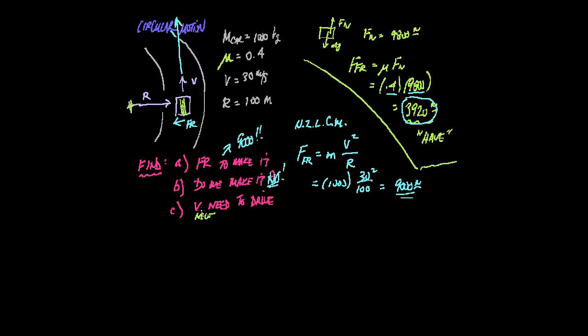So how fast can we go into that corner? Well, we're going to still use Newton's second law for circular motion. The friction we're going to use now is the 3920 because that's how much we have available based on our car and the coefficient. Put the 1,000 in there. That's V squared. The radius is still 100.